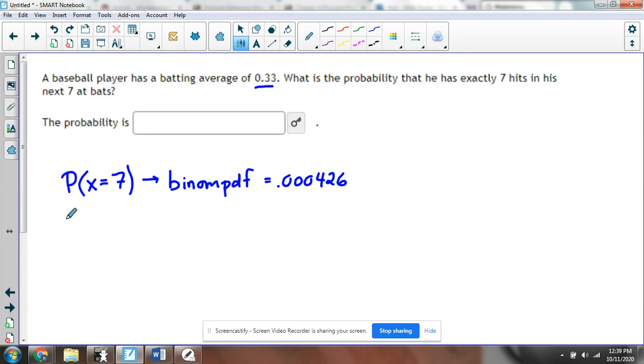Now let's say I want to know what's the probability of him getting 4 or less hits. That's going to be the probability that X is less than or equal to 4. Whenever you're looking for a probability of being less than or equal to something, that's going to be binomial CDF, cumulative distribution function, adding up to 4.